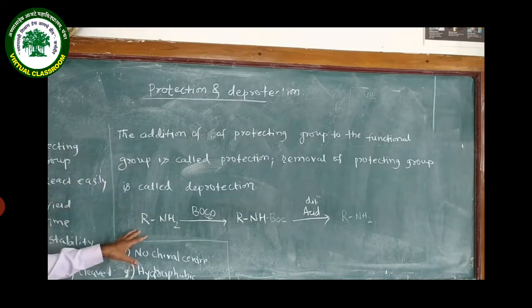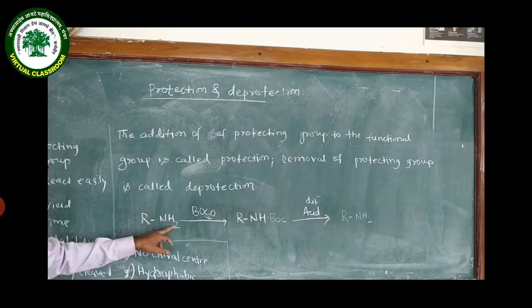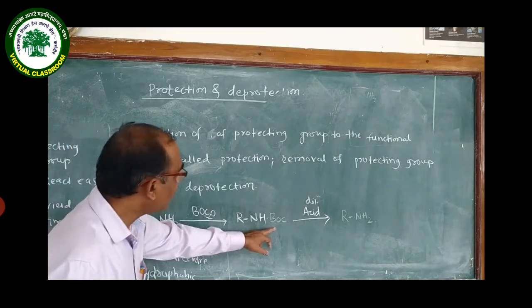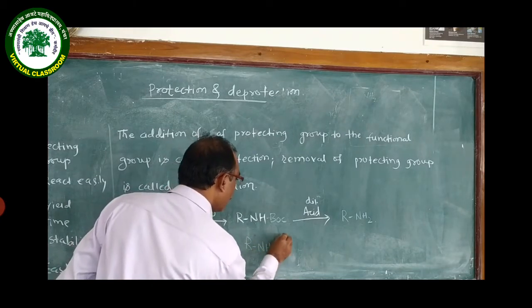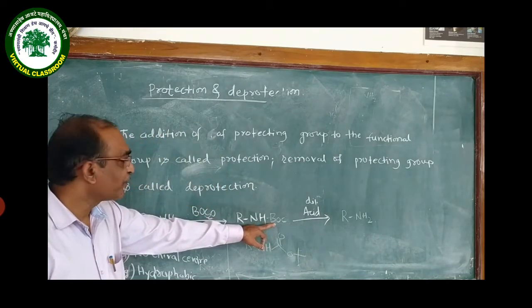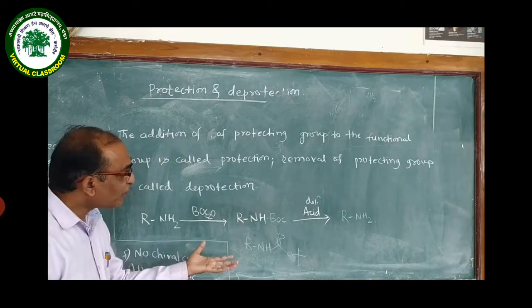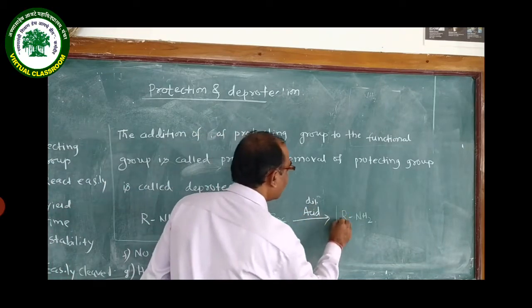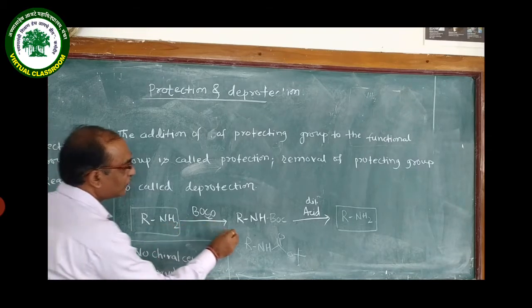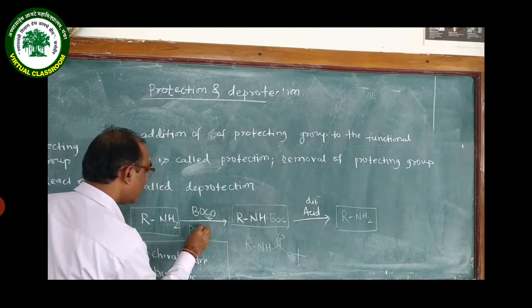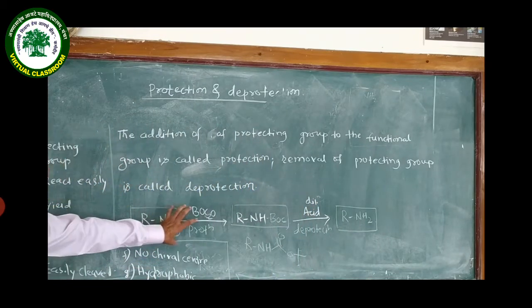Consider this example: an amine R-NH2 treated with BOC anhydride. The H from NH2 gets replaced with the BOC group, giving R-NH-BOC. This is the protection step. Deprotection is carried out using dilute acid — for example, dilute HCl — to remove the BOC group and regenerate the R-NH2. So protection converts the functional group to a protected form, and deprotection recovers the original functional group without creating any additional chiral centers.